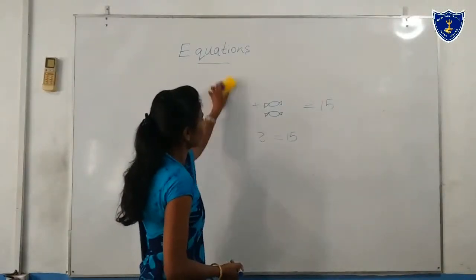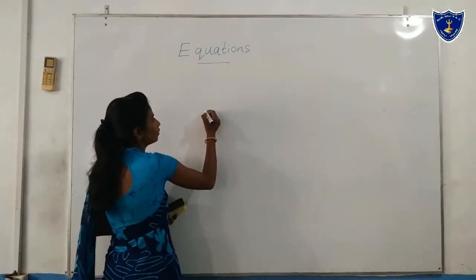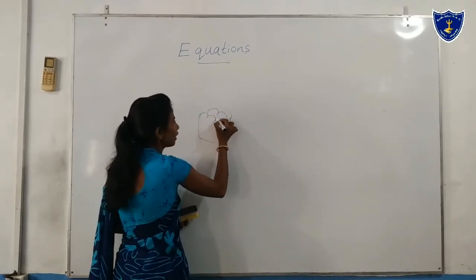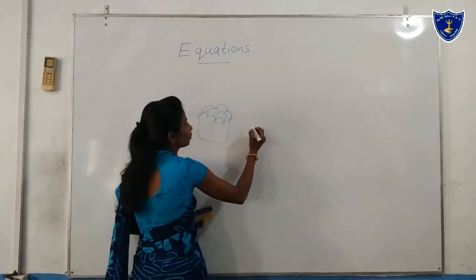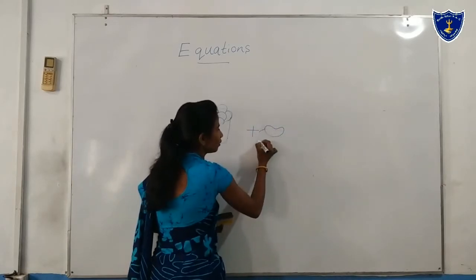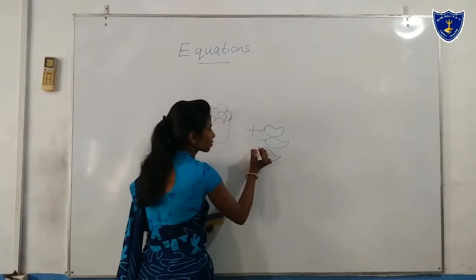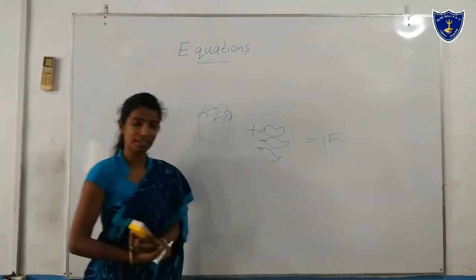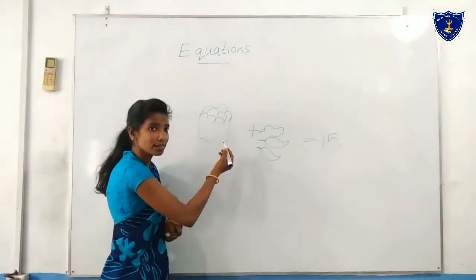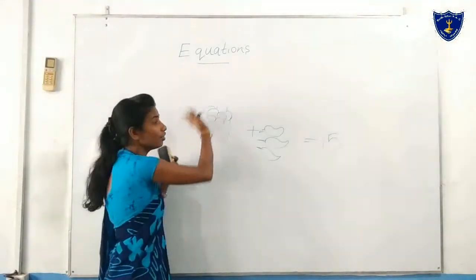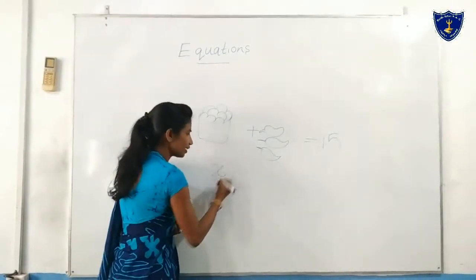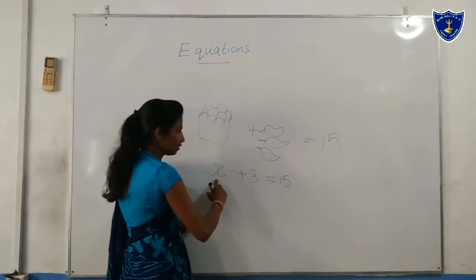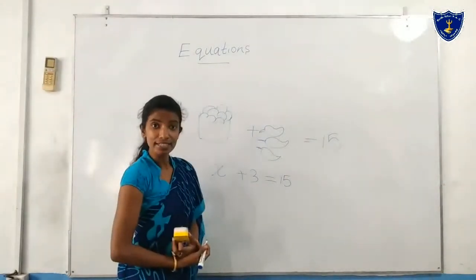Shall we move to another equation? Here we can see mangoes — 3 mangoes equals 50. Now we want to take this as an algebraic term because this is an unknown value. Shall we take it as x? Here we can see 3, so 3x plus 3 equals 50. That is a simple equation.